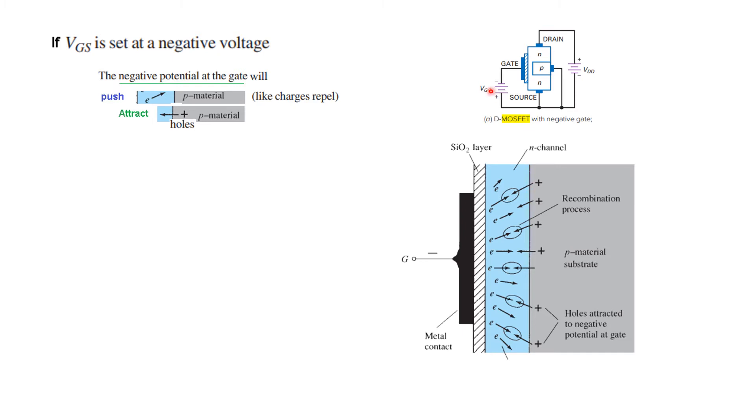Okay, if VGS is at the negative voltage, then what will happen? So when we apply a negative voltage, the negative potential at the gate will push electrons into the P-type material. So the electrons here in this N-type material will be pushed because of negative charge here, negative potential here, it will push the electrons further towards right towards the P-type region because the like charges repel.